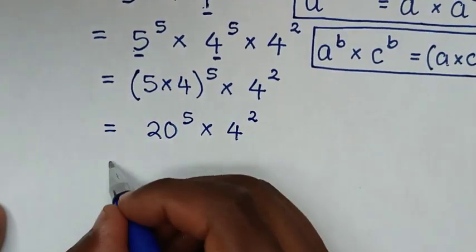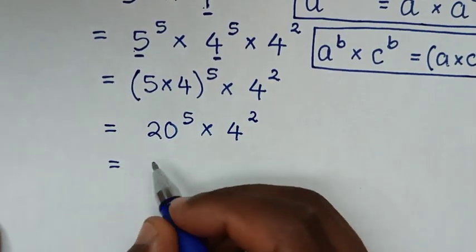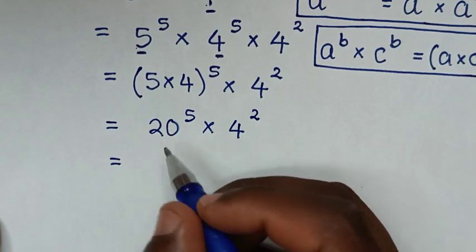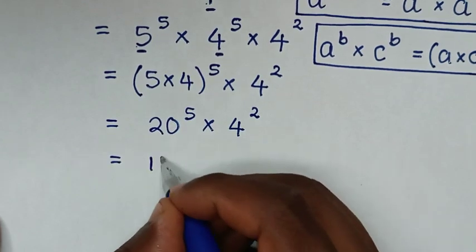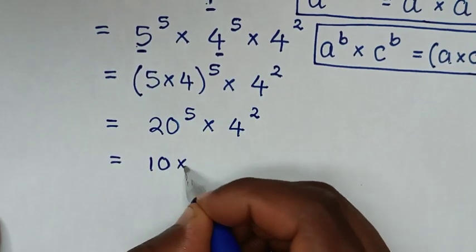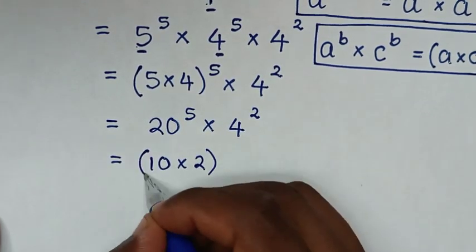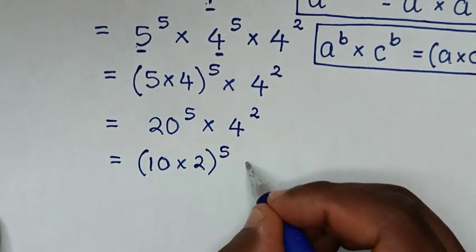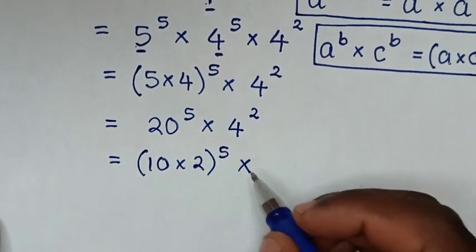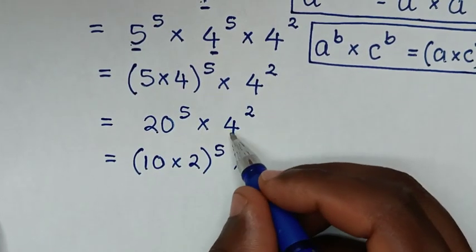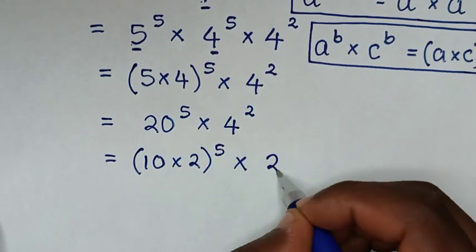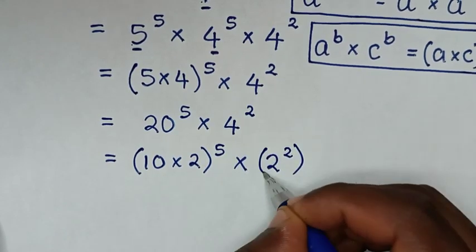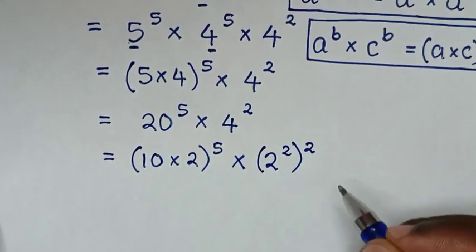Then it will be equal to: from 20, to have a base of 2, we write 20 as (10 times 2) to the power of 5. For the 4, to have a base of 2, we write 4 as 2 power 2, then to the power of 2.